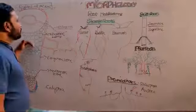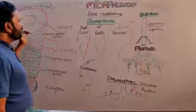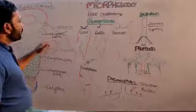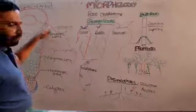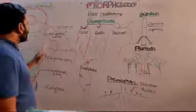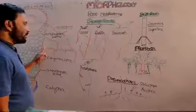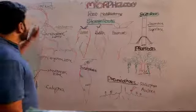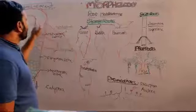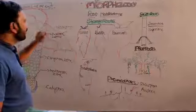Above the elongation zone there is a maturation zone. From this maturation zone, root hairs and lateral roots are formed. The root hairs are unicellular and exogenous — meaning developed from the epidermal cells. Lateral roots are endogenous, developed from the pericycle, and are multicellular.